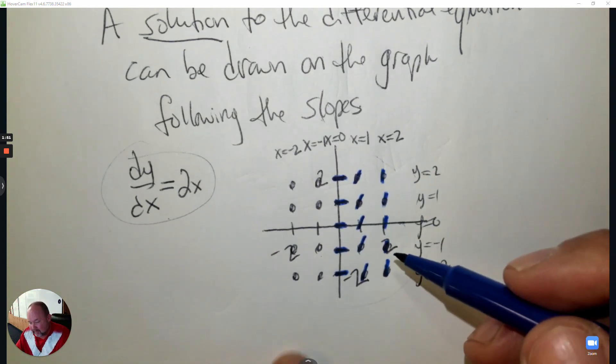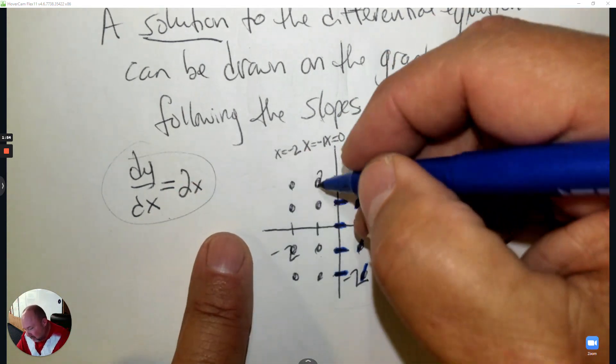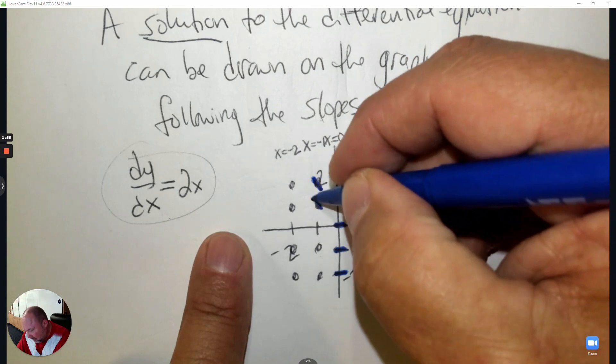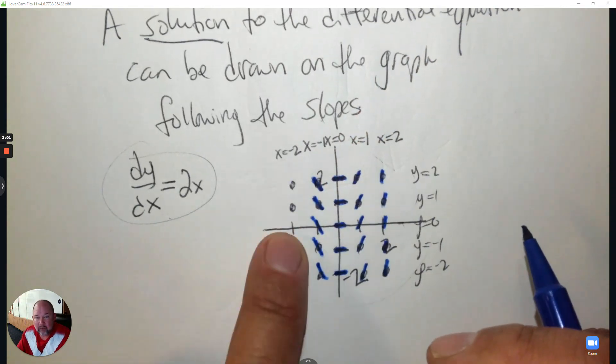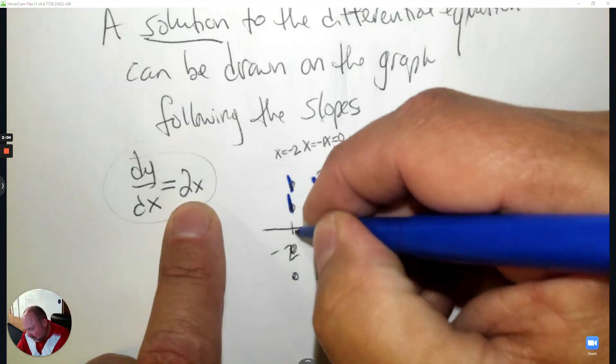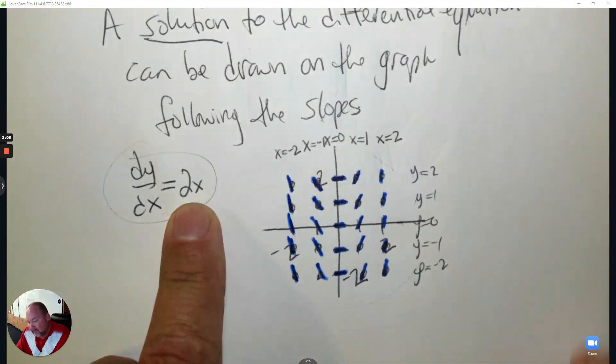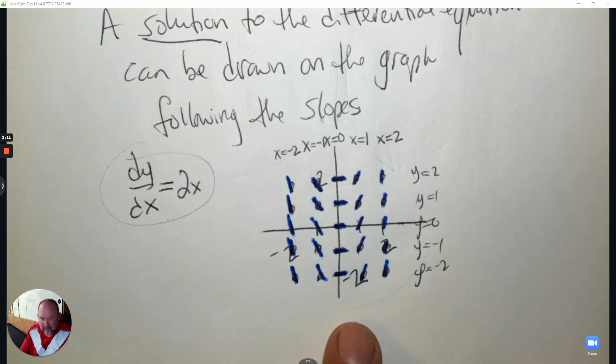On the negative side, if I plug in negative 1, I get negative 2, so I draw a slope at negative 2. And then if I plug in negative 2, I get negative 4, that's even steeper negative. And then you have a whole graph full of little lines with slopes on it.